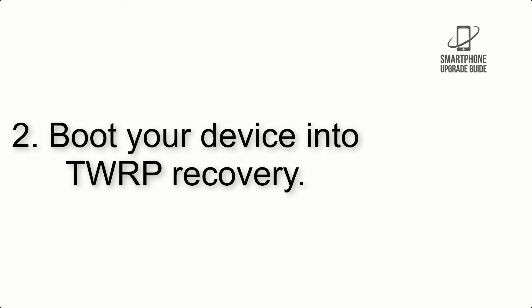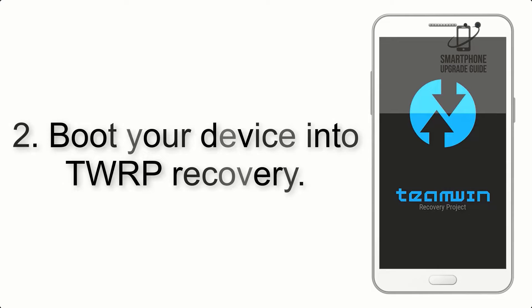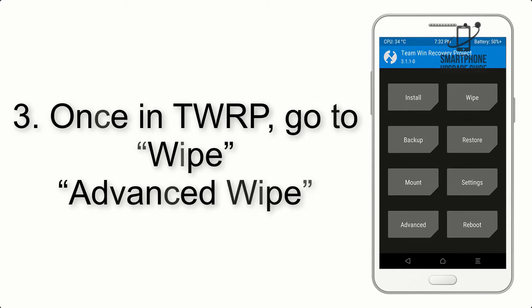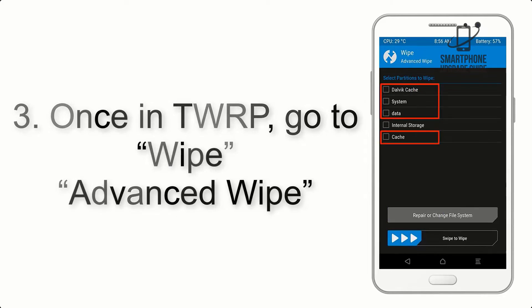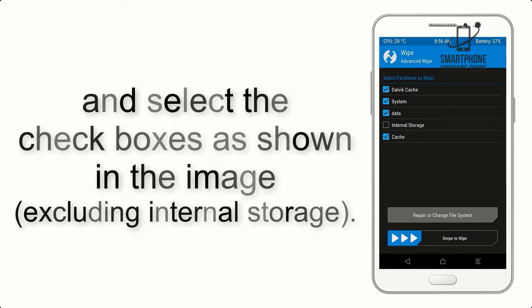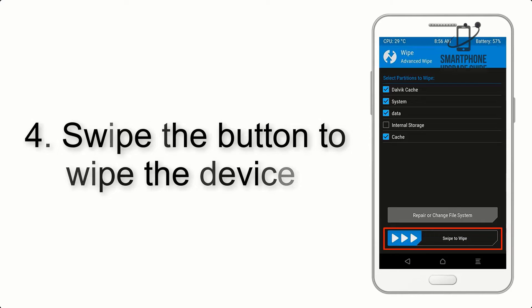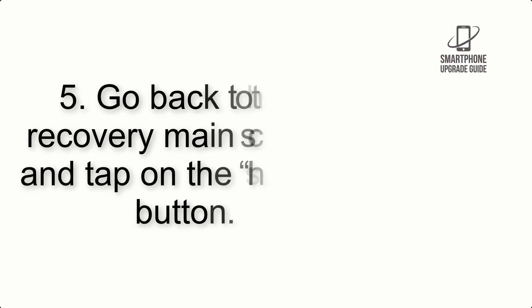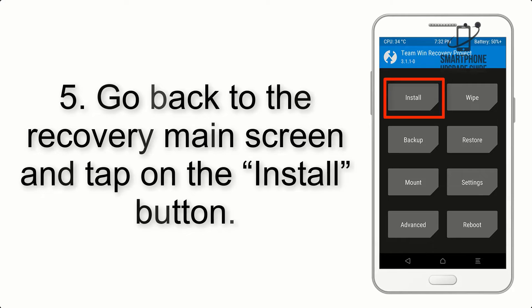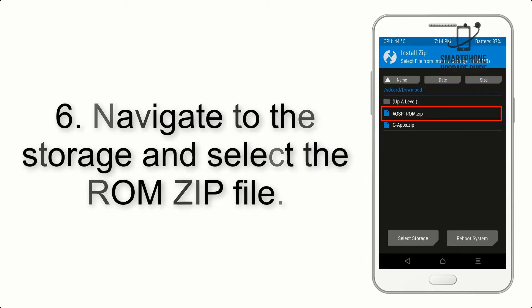Step 2: Boot your device into TWRP recovery. Once in TWRP, tap on Wipe, then Advanced Wipe, and select the checkboxes as shown in the image, excluding internal storage. Step 4: Swipe the button to wipe the device.